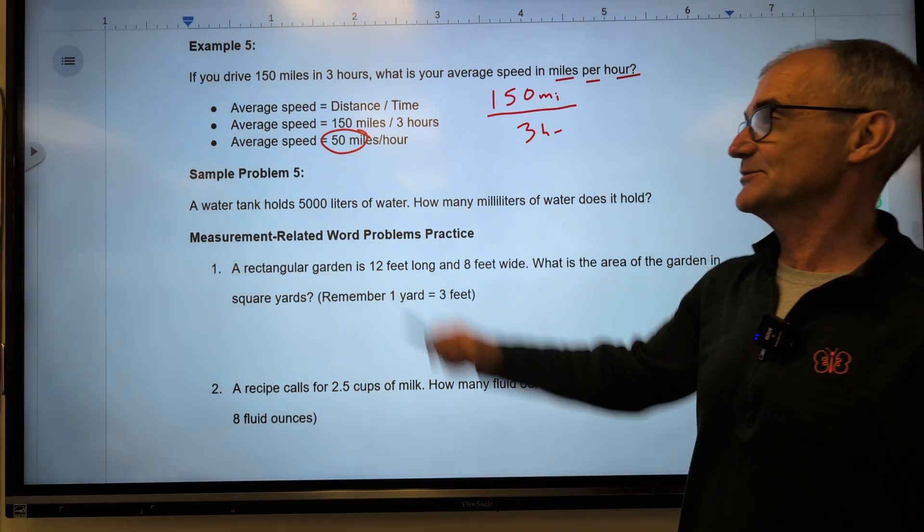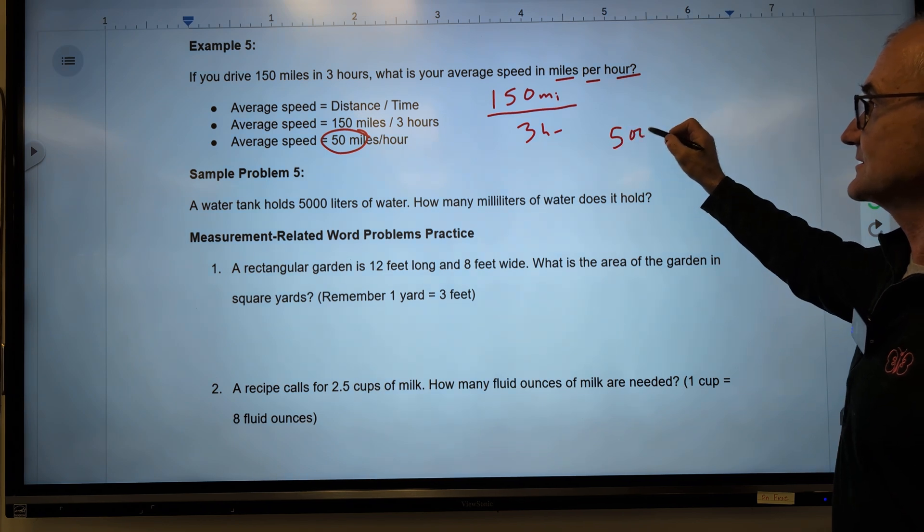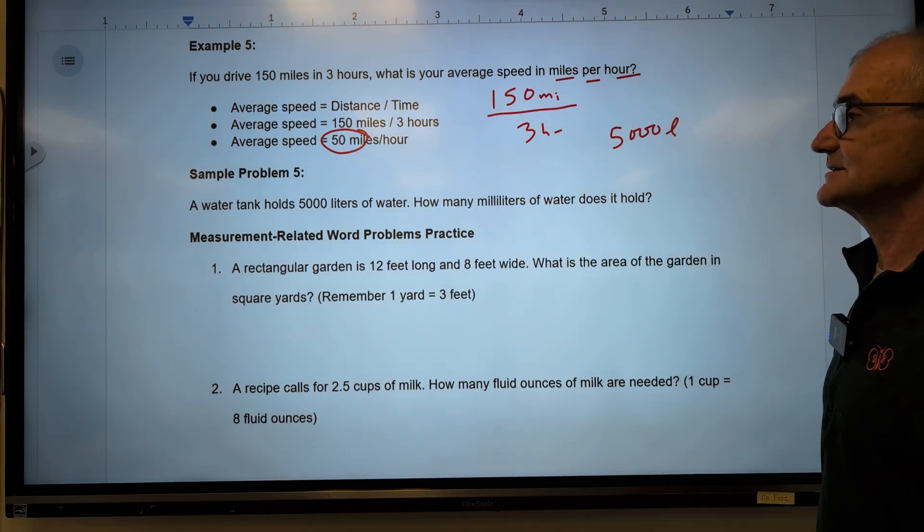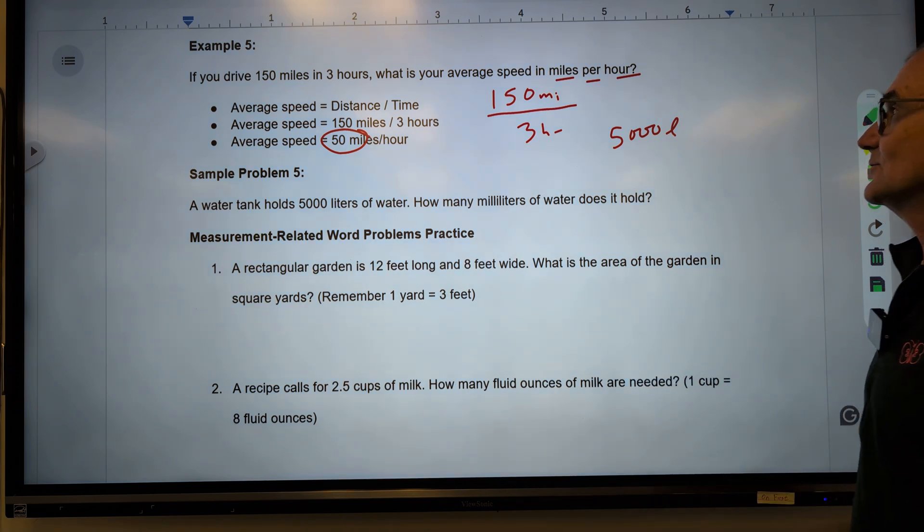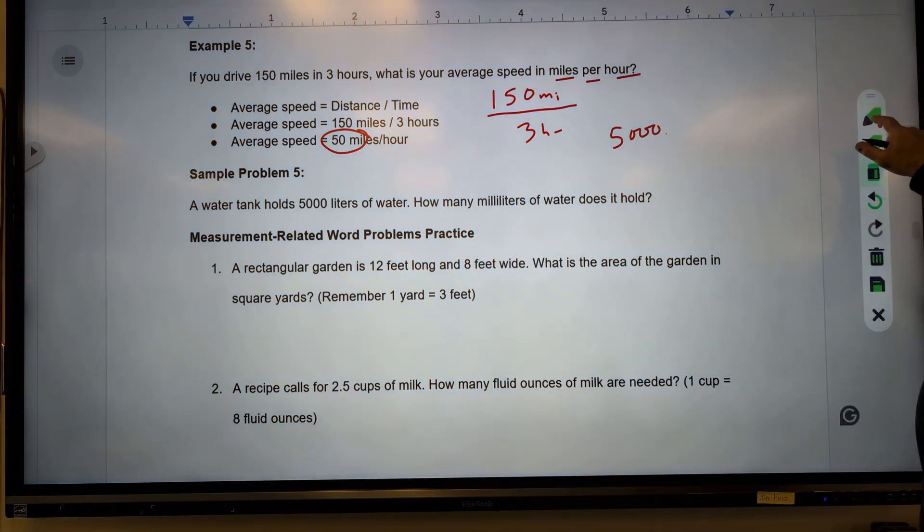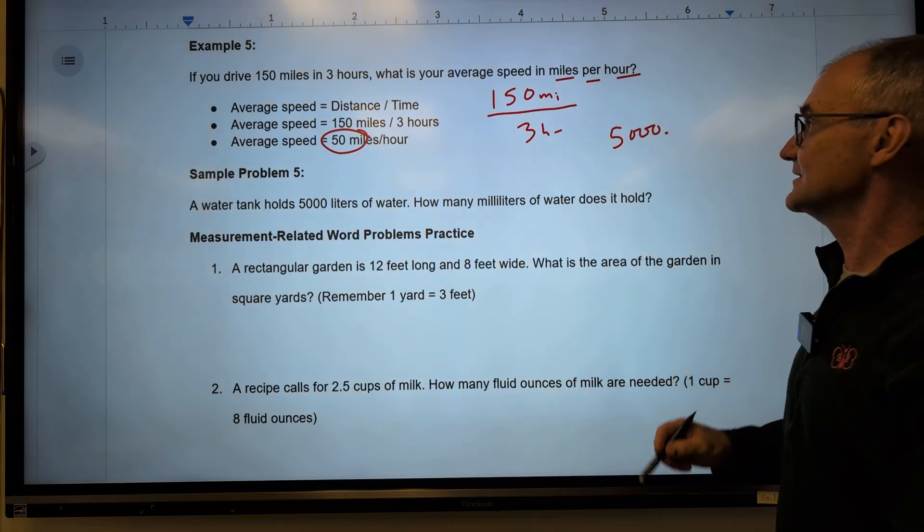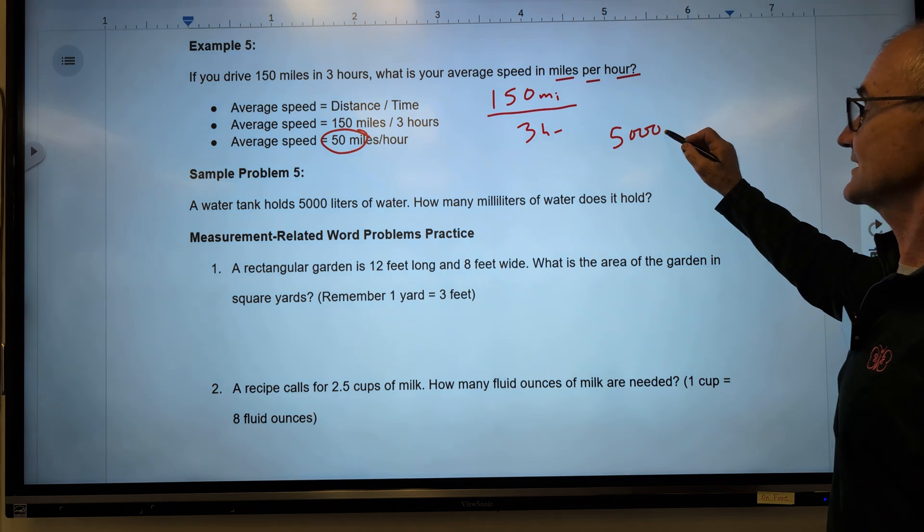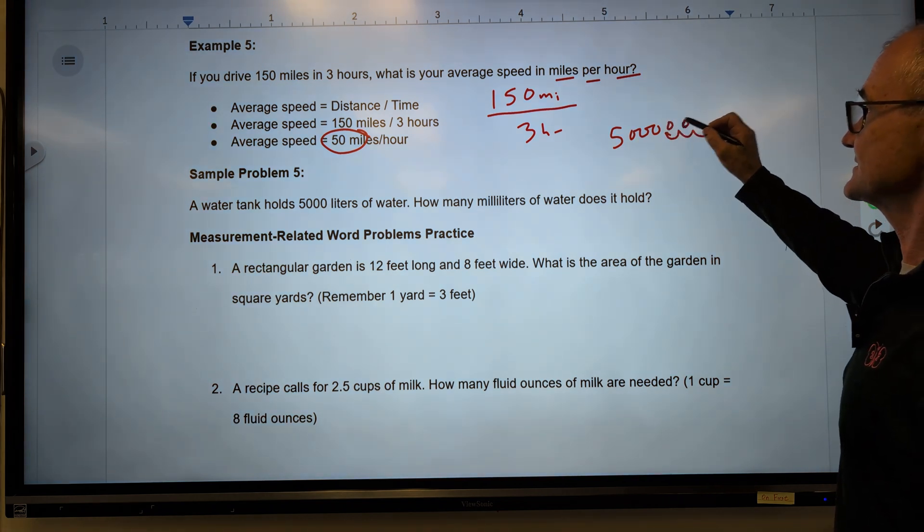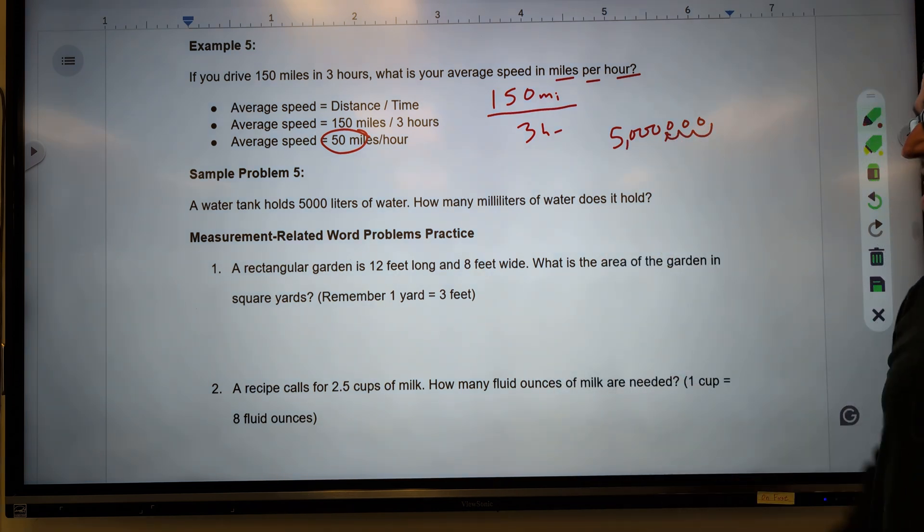Here's another sample problem. A water tank holds 5,000 liters of water. How many milliliters does it hold? Well, 5,000 liters, and I want to go to milliliters. Mill is 1,000, so that means I've got to multiply this by 1,000, so I go over 1, 2, 3, add three zeros on there, so it's going to hold 5 million milliliters.